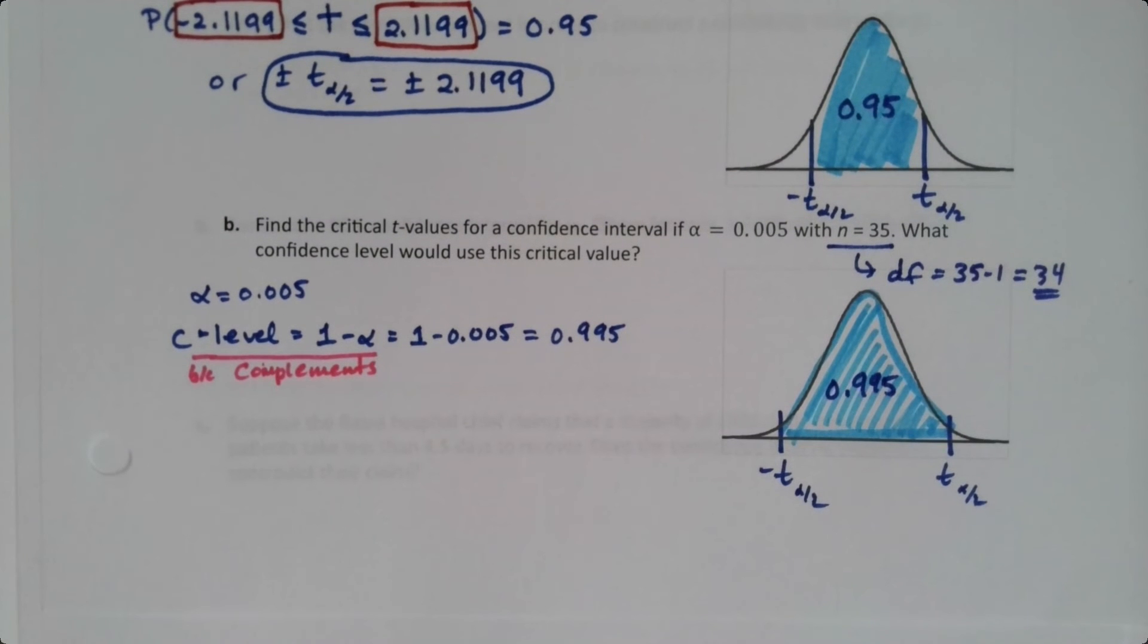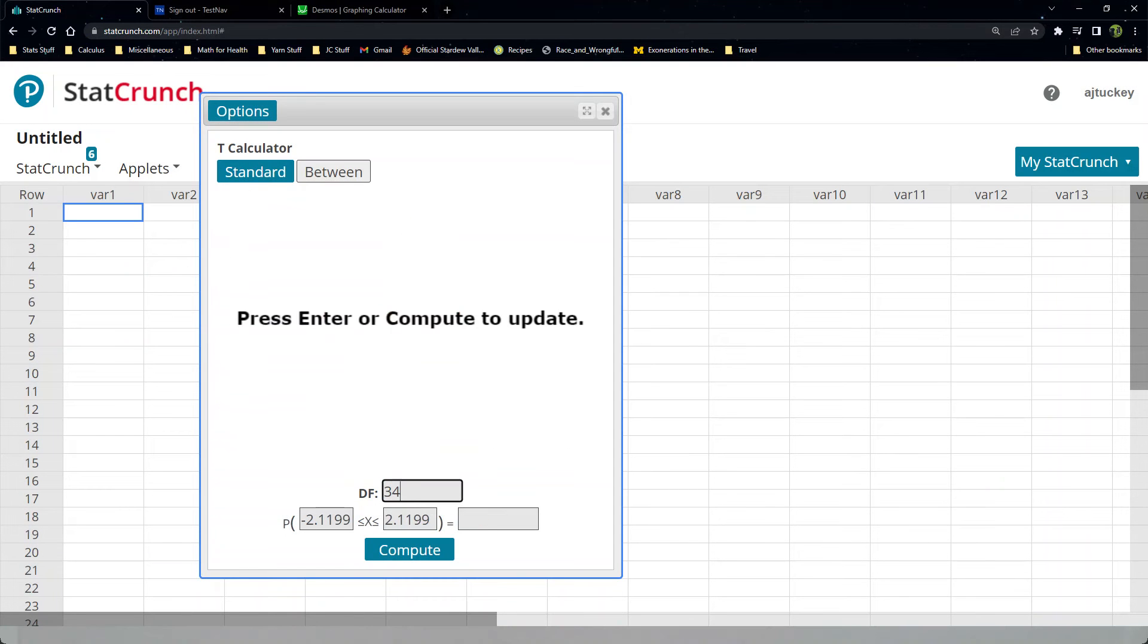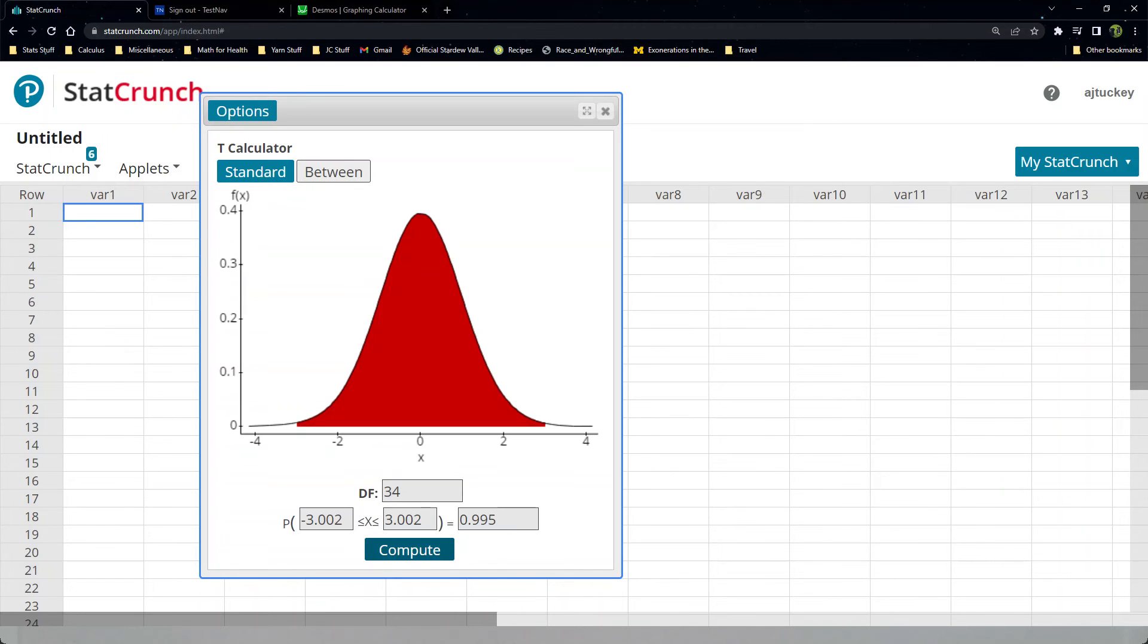Okay, so let's go back to StatCrunch. So we're going to make 34 for our degrees of freedom. We're going to put 0.995 in as the area. And then press enter, or compute, and we have it.